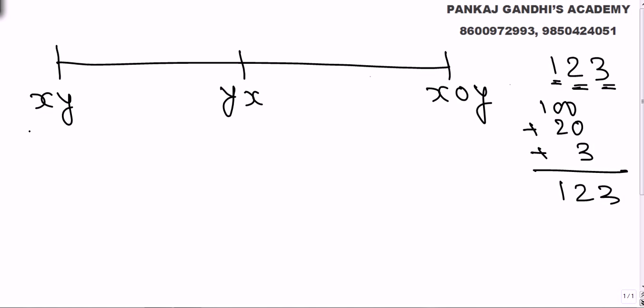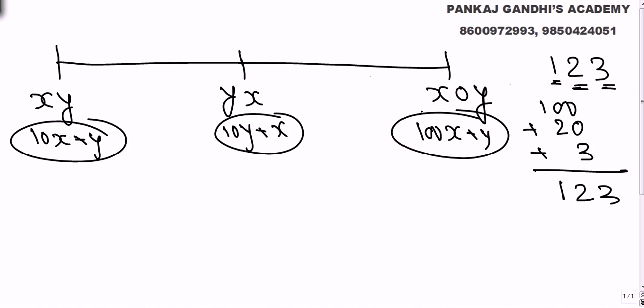So when we say xy, this is nothing but 10x plus y, tens place units place. This is nothing but 10y plus x and this is nothing but 100x plus y. So in one hour car went from xy to yx, that is from 10x plus y to 10y plus x.